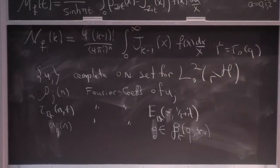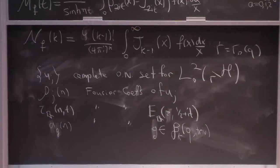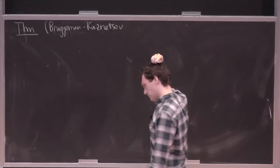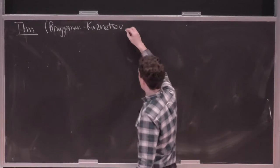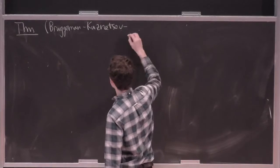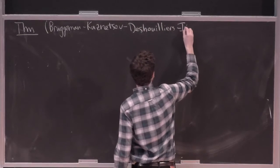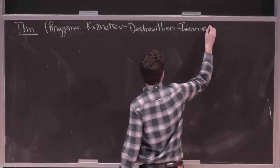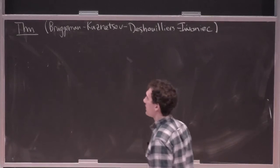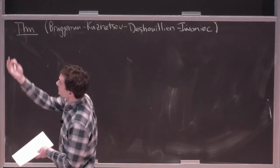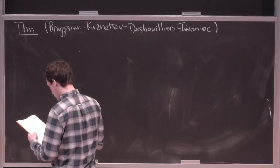g was going to be in this orthonormal basis of holomorphic forms of weight k for Γ₀(q) with trivial central character. Okay, and then the formula will come on the next board. So I guess I'll attribute it to Bruggeman-Kuznetsov, but I think it's important also to say I think the generalization to Γ₀(q) was done by Deshouillers-Iwaniec. And they, I think, really pushed the arithmetic applications of this formula with the arbitrary test function on the geometric side.